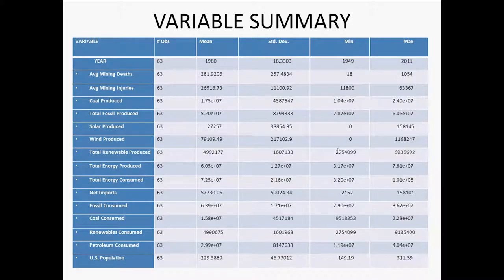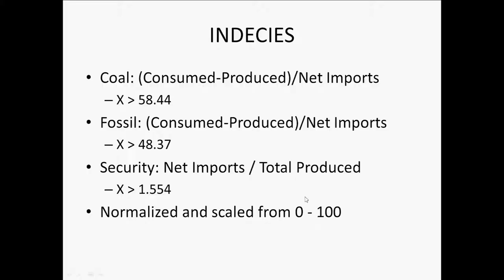Here's a list of some of the variables used — for example, the year, average mining deaths, average mining injuries, total types of energy produced (renewable, coal, wind, solar), and energy consumed broken up by category. Also considered are explanatory variables such as the Consumer Price Index and US population. Many models are growth models or log-log models using a combination of regular and logarithmic variables, or purely logarithmic independent and dependent variables.